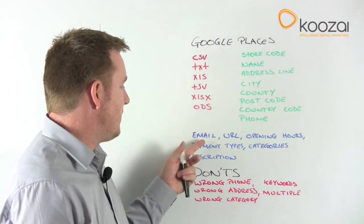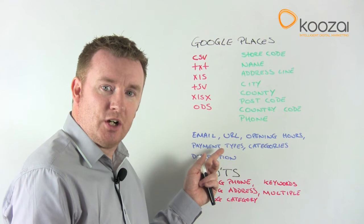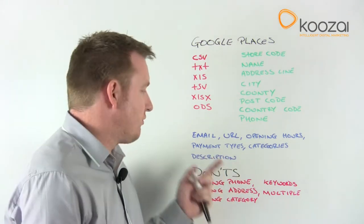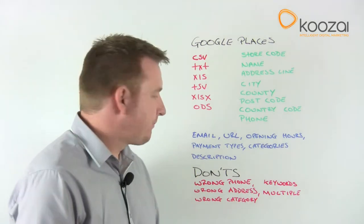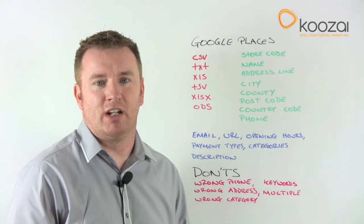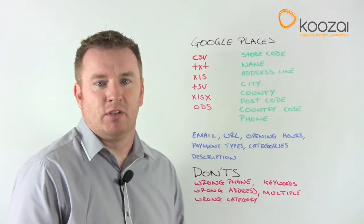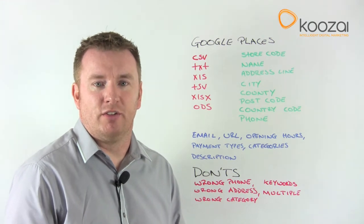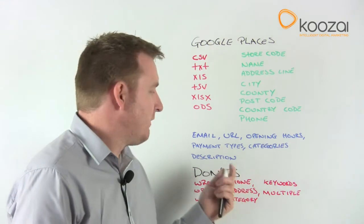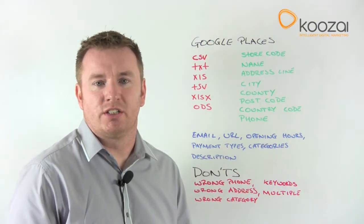I would also add the email, the URL, opening hours, payment types, categories, and the description. These are optional, but I think they should be included. Opening hours and payment types are probably more relevant to an actual store or shop. If you've just got an office that people don't visit, don't worry too much about opening hours or payment types. If you're a store, make sure you include whether you take cash, cheques, or credit cards.